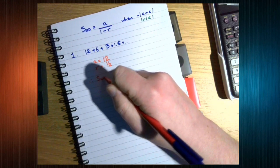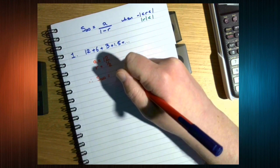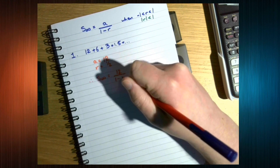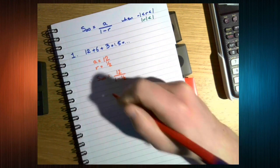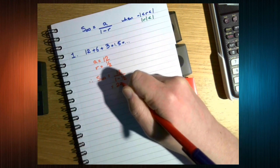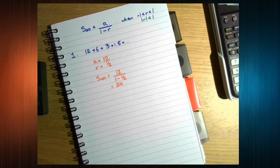So, the sum to infinity is a over 1 minus r. And that's it.